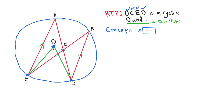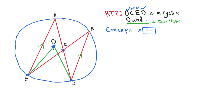Looking at this, I can see that proving E2 equals D1 won't be easy. But proving O2 equals C3 looks manageable. If I can prove that O2 is equal to C3, then I've proven that OCED is a cyclic quad. That's how you solve this question.